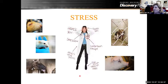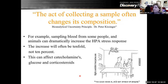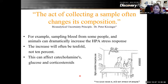And then there's us — we tend to put our stress on the animals as well. The act of collecting a sample often changes its composition. For example, if you're sampling blood from people — my daughter being one, she's 11 and has massive responses to needles — it can greatly increase the HPA stress response. This doesn't just increase your sample response by a little bit; this is like 10-fold. It affects your samples — your catecholamines, glucose, and corticosteroids.